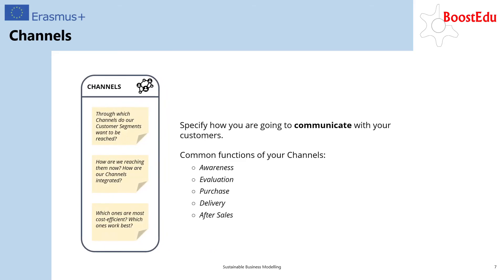The third building block contains your channels, and they are your way of communicating with your customers and how you deliver your products to them. Start with asking yourself: how do your customers want to be reached, but also how are you reaching them right now? In general, you can reach your customers either through directly owned channels, like retail stores or websites that are owned by the company itself, or through indirectly owned channels, such as partner websites or wholesale distributions. In the end, you can use a mix of both, but finding the right channels is crucial in bringing your value proposition to the market.